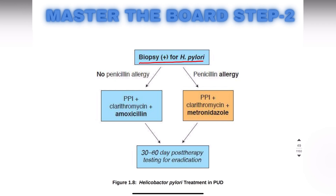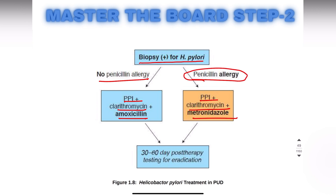If the biopsy of H. pylori comes back positive and there is no penicillin allergy, we give PPIs with clarithromycin and amoxicillin. If there is a penicillin allergy, then with PPIs we give clarithromycin and metronidazole. In both cases, we do post-therapy testing for eradication after 30 to 60 days.